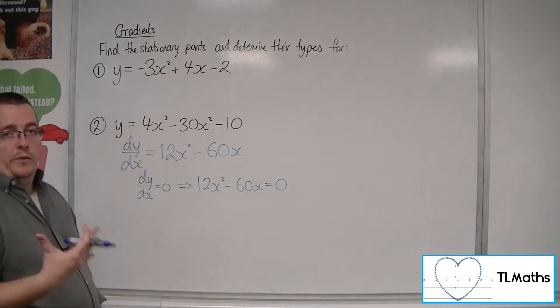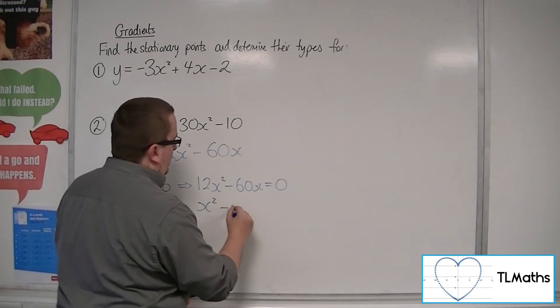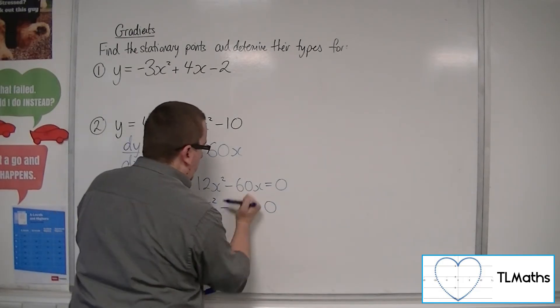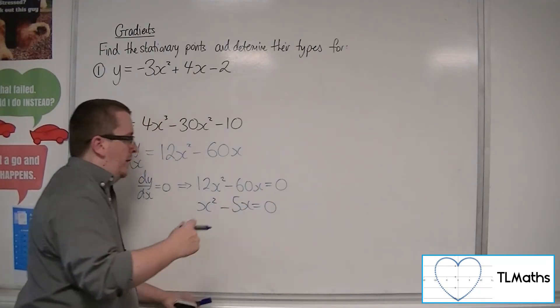So 12x squared minus 60x is 0. Now, we can divide both sides of this by 12 to simplify it for us. So that would be x squared minus 5x is 0. Oh sorry, not x. 60 divided by 12 is 5, so 5x.